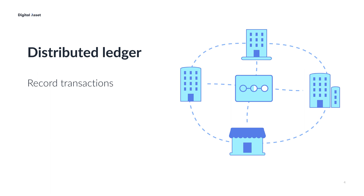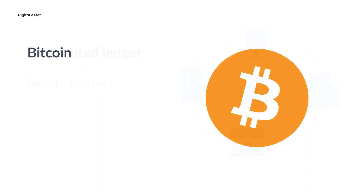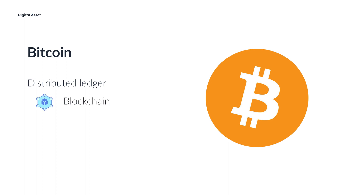Depending on the system, this isn't always straightforward. You may be familiar with Bitcoin, which uses a distributed ledger to create and track the digital currency's transactions. To ensure transactions are recorded in the right order, Bitcoin uses two concepts known as a blockchain and proof-of-work.